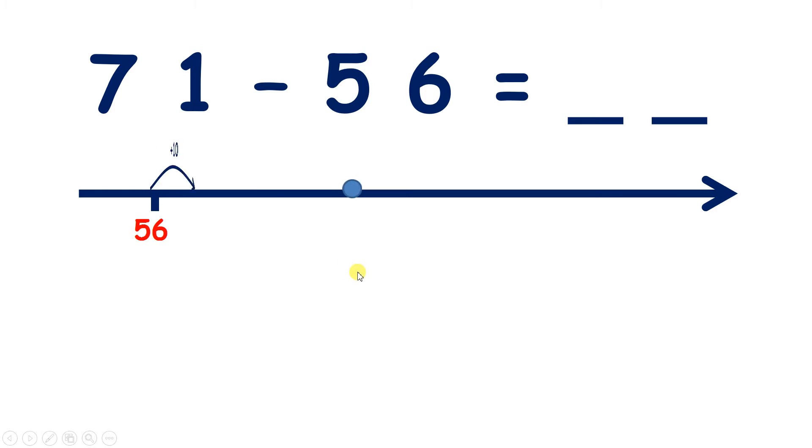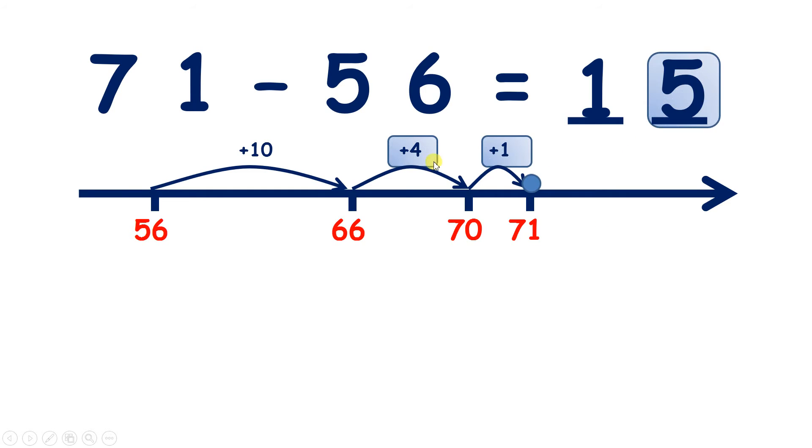You could do this in fewer steps. So you still add 10 to make 66, so you have one ten. But if you're on 66, four more would take you to 70, and one more takes you to 71. So you have five units because you've added four and you've added one, so five all together.